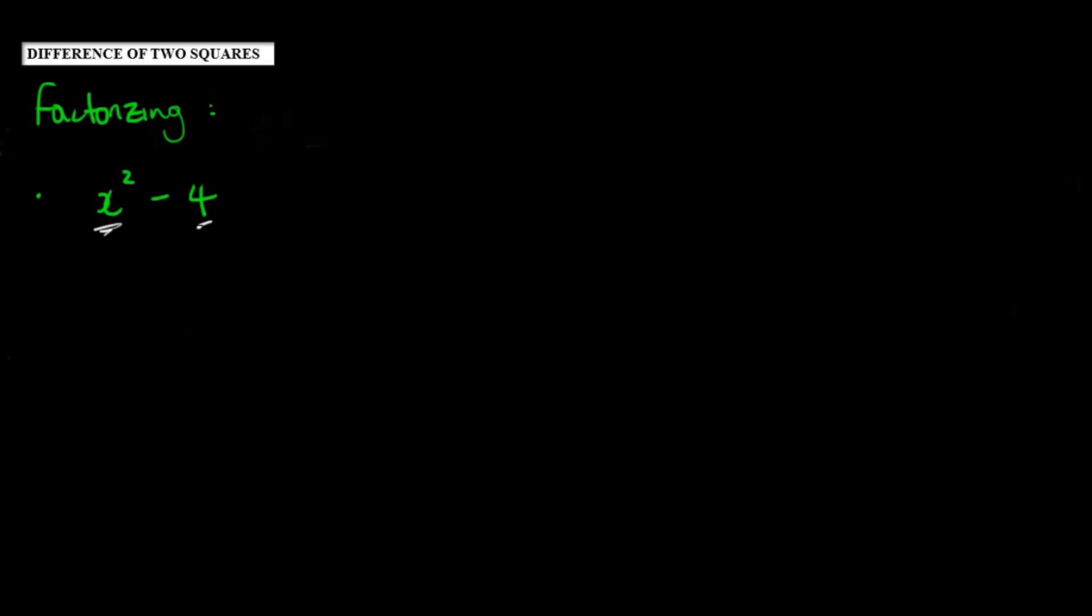Now if we think about this right here, x times x would give us x squared and 2 times 2 would give us 4. So these two numbers are what we call square numbers.